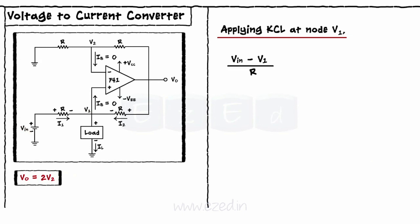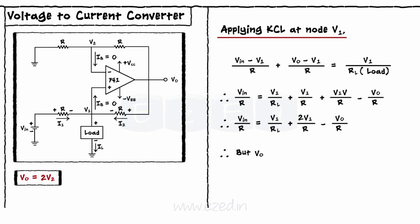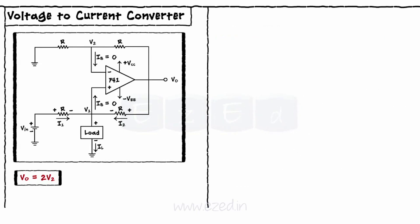Applying KCL at node V1, Vin minus V1 upon R plus Vout minus V1 equals V1 upon RL. We rearrange the equation in terms of Vin upon R. But Vout equals 2 into V2. Thus, Vin upon R equals V1 upon RL plus 2V1 upon R minus 2V2 upon R. Also, V1 equals V2. Thus, Vin equals V1 upon RL.